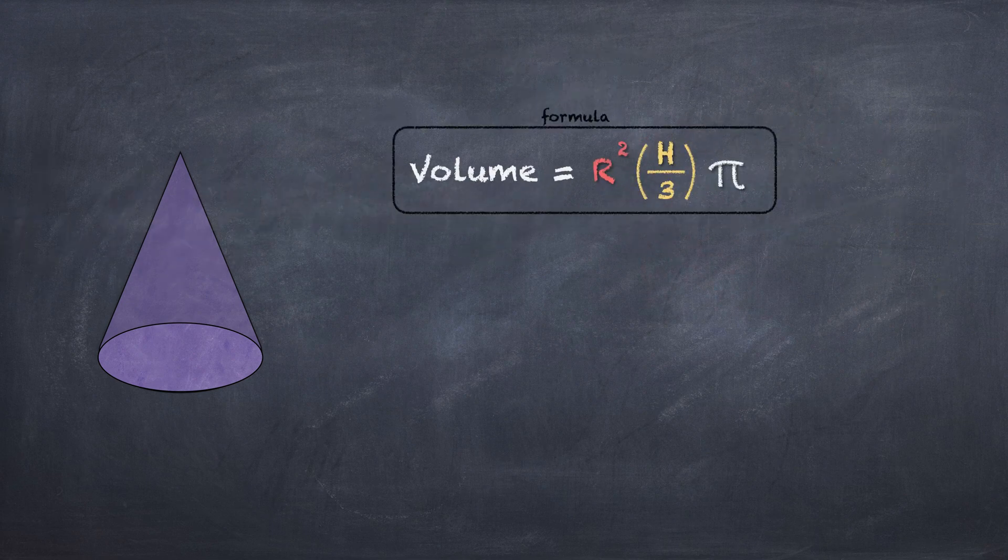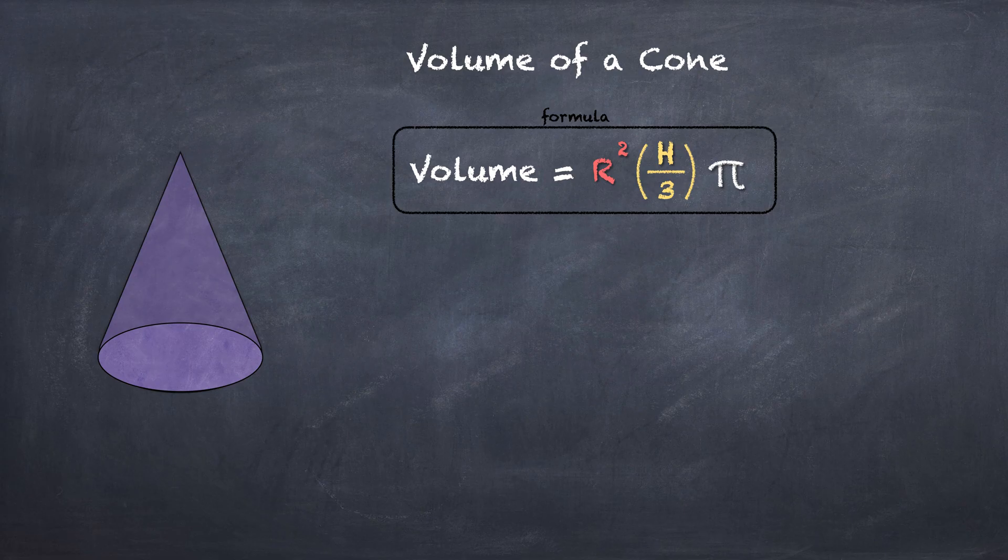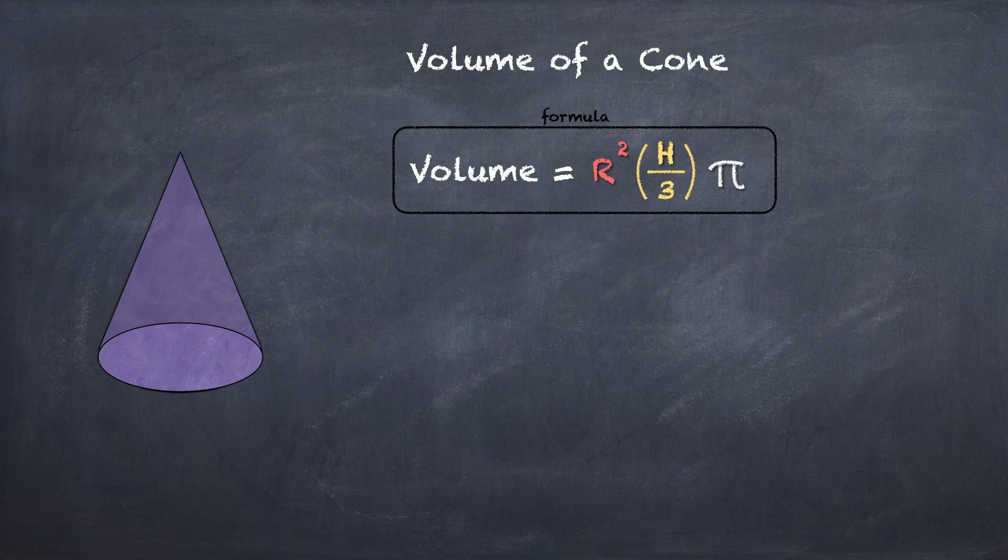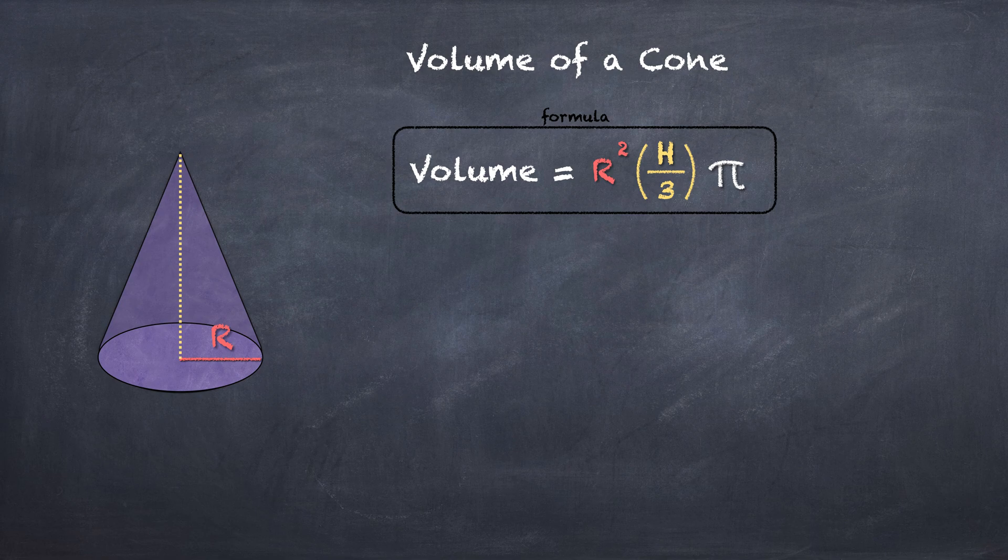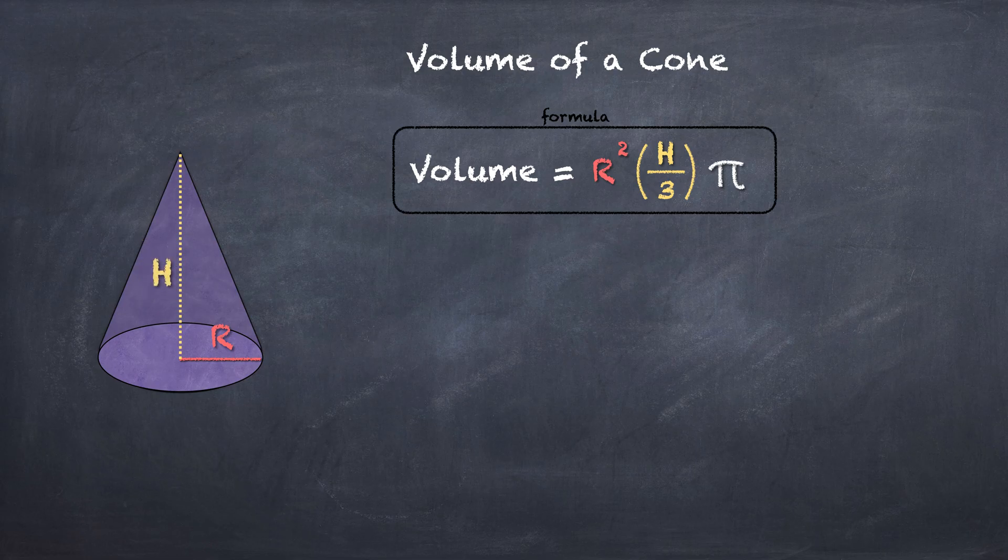Let's move on to volume of a cone. The formula for volume of a cone is right there: the radius squared times the height divided by 3 times π. So again, there's the radius of the cone. The height goes from the middle of the cone base, all the way up to the top. That is what the height is.